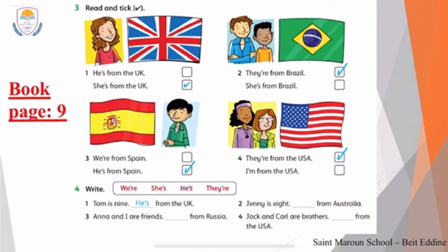Number four — we have to fill in the blanks. Number one: Tom is nine. He is from the UK. Number two: Jenny is eight. She is from Australia. Anna and I are friends — we're from Russia. Very good. Number four: Jack and Carl are brothers. They're from the USA.